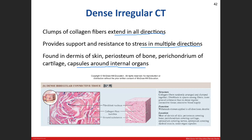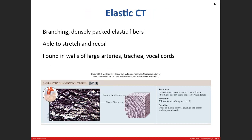Dense elastic connective tissue has elastic fibers as the predominant fiber type, packed relatively tightly to withstand a lot of stretching and recoiling. We see it in the walls of large arteries, where it accommodates blood pressure changes, and also in the trachea and vocal cords.